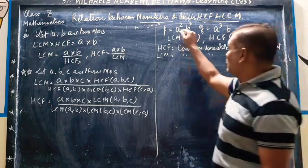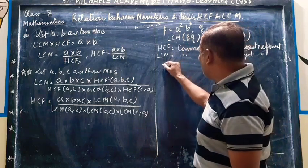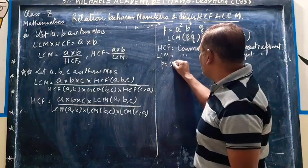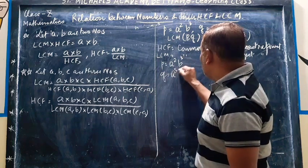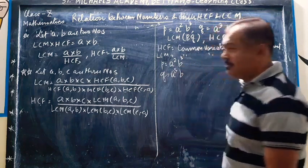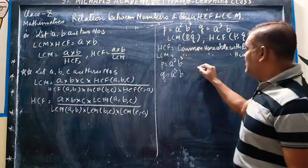common variable with highest exponent. Is it clear? Now, I am going to find out that P is equal to A square B cube and Q is equal to A cube B.